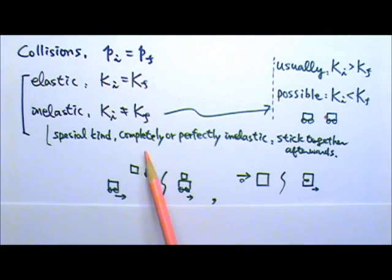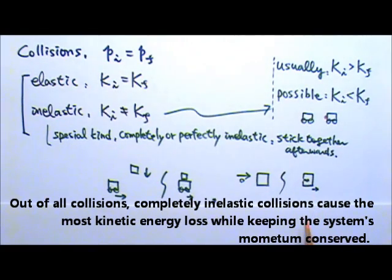In a completely inelastic collision, there is always kinetic energy being lost. For example, when a bullet enters a block, there must be a lot of friction between the bullet and the block, and therefore a lot of kinetic energy is turned into heat in this process. In fact, out of all possible collisions, completely inelastic collision causes the most kinetic energy loss while keeping the system's momentum conserved.